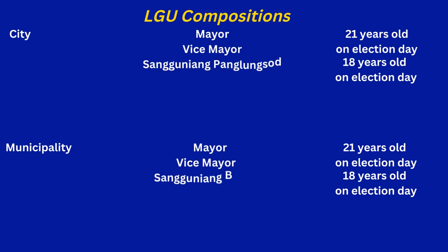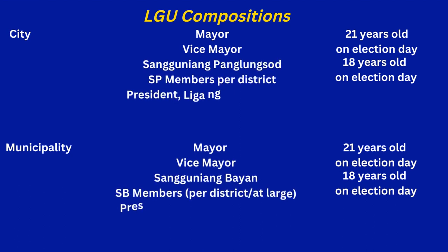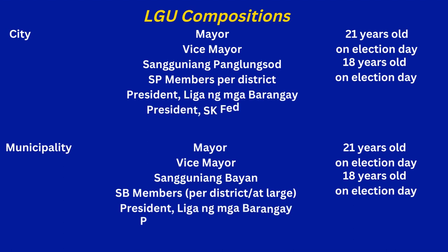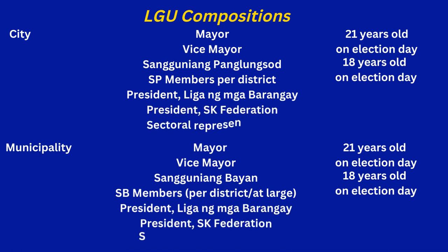For the city, the mayor and vice mayor must be 21 years old on election day, and the Sanggunian Panglungsod members shall be 18 years old on election day. Similarly, the Sanggunian Panglungsod also includes the Liga ng Barangay on the city level, the president of the SK Federation on the city level, together with sectoral representatives.